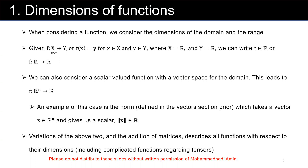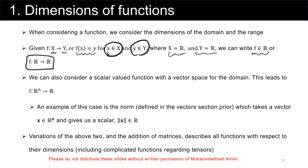Considering f from domain X to range Y, or f of x equals y, for x which is a member of domain X, and y which is a member of range Y, where both the domain and range are real values. We also consider a scalar value function where its input is a vector space — x is a vector. So the input for our function could be n-dimensional, and the output could be a scalar. So the input is a vector, the output is a scalar.